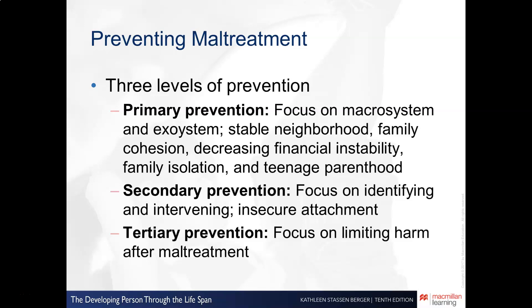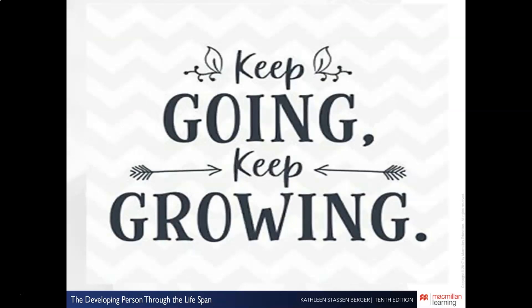Tertiary prevention — meaning third-level prevention — focuses on limiting harm after maltreatment has already occurred. So if maltreatment has occurred, tertiary preventive processes may need to be pursued. That concludes the discussion on biosocial factors in this phase of development, with two more chapters still to come.